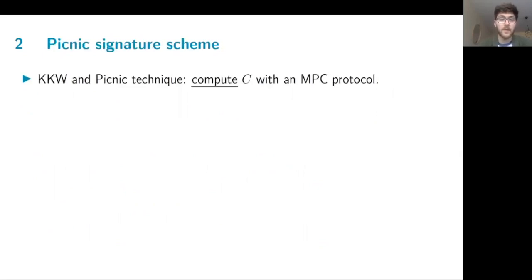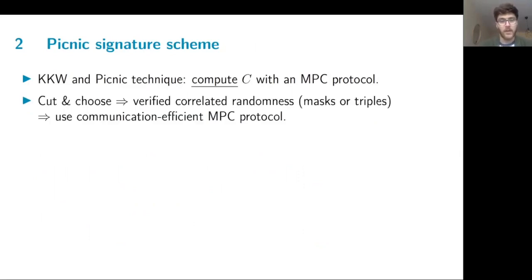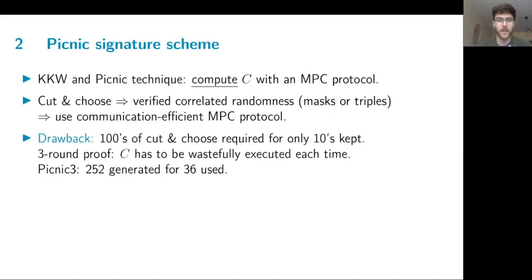Building signature schemes from zero-knowledge proofs was done before. The latest advancement in the PICNIC scheme uses the KKW technique, which was presented at CCS 2018, where the idea is to compute the circuit with an MPC protocol. This circuit uses correlated randomness, so binary masks or triples, which must be verified. So the verifier must be convinced by the prover that these correlated randomness are correct. Here the PICNIC scheme uses a cut-and-choose technique, which then allows for a communication efficient MPC protocol.